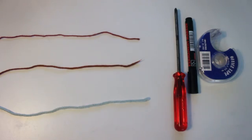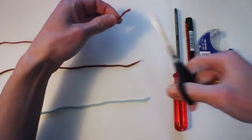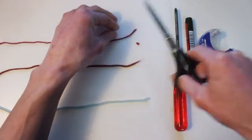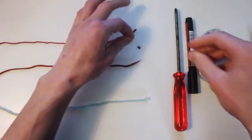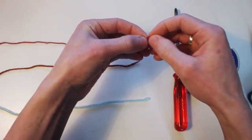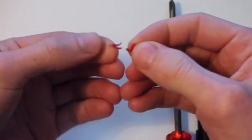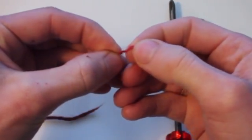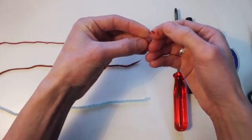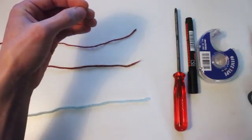Traditionally you'd see something referred to as a ply, and what a ply means is the strands that make up the entirety of the yarn. So if we take a look at this yarn and just break it apart, you can see it's made up of smaller bits of yarn. In this one we have six, so in that sense it's a six ply.